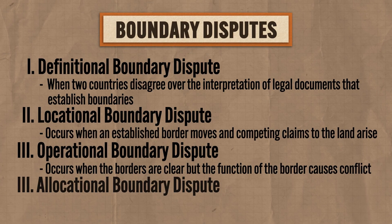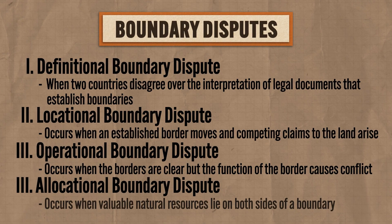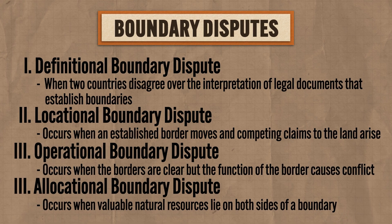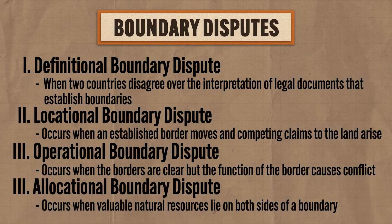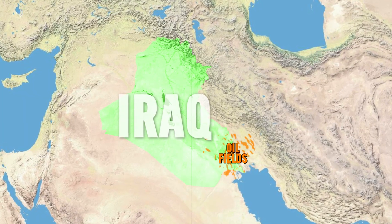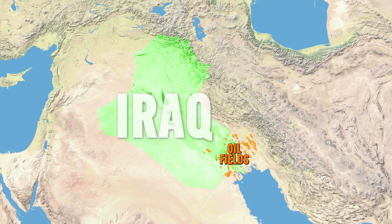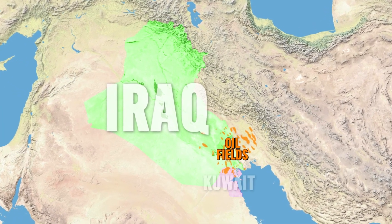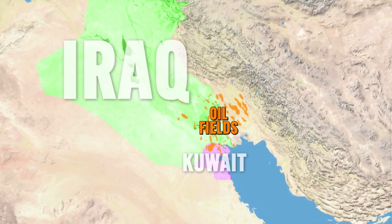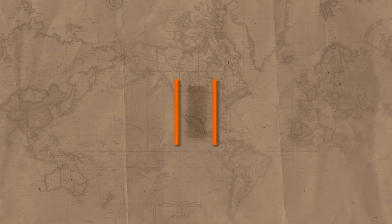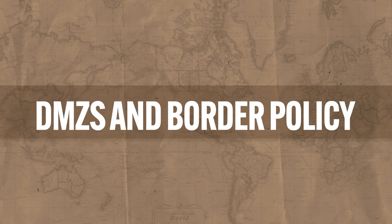And fourth is an allocational boundary dispute, which occurs when valuable natural resources lie on both sides of a boundary. In this case, the dispute comes down to who has the rights to that resource. For example, Iraq has massive oil fields under its territory and its diminutive neighbor Kuwait holds sovereignty over a small part of those fields. A dispute arose in the 1990s when Iraq accused Kuwait of drilling into their portion of the oil fields, and we got ourselves a war because of that dispute.